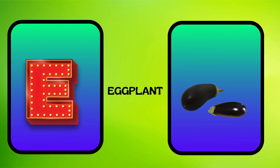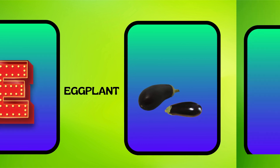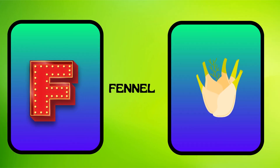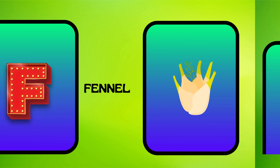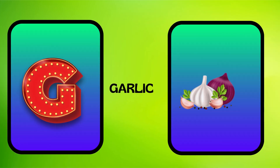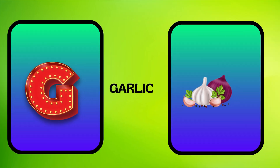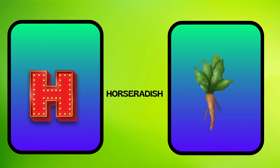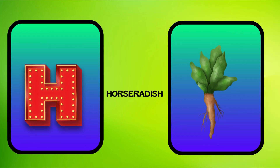E is for eggplant, eggplant. F is for fennel, fuh, fennel. G is for garlic, guh, garlic. H is for horseradish, ha, horseradish.